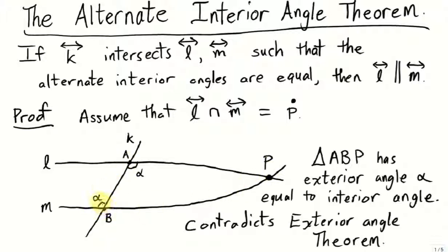Now we know from Euclid's Proposition 16, the exterior angle theorem, that any exterior angle to a triangle, such as this one at the point B, the exterior angle is greater than or equal to either of the two opposite interior angles. So this angle should be greater than both this angle at A and this interior angle at P.